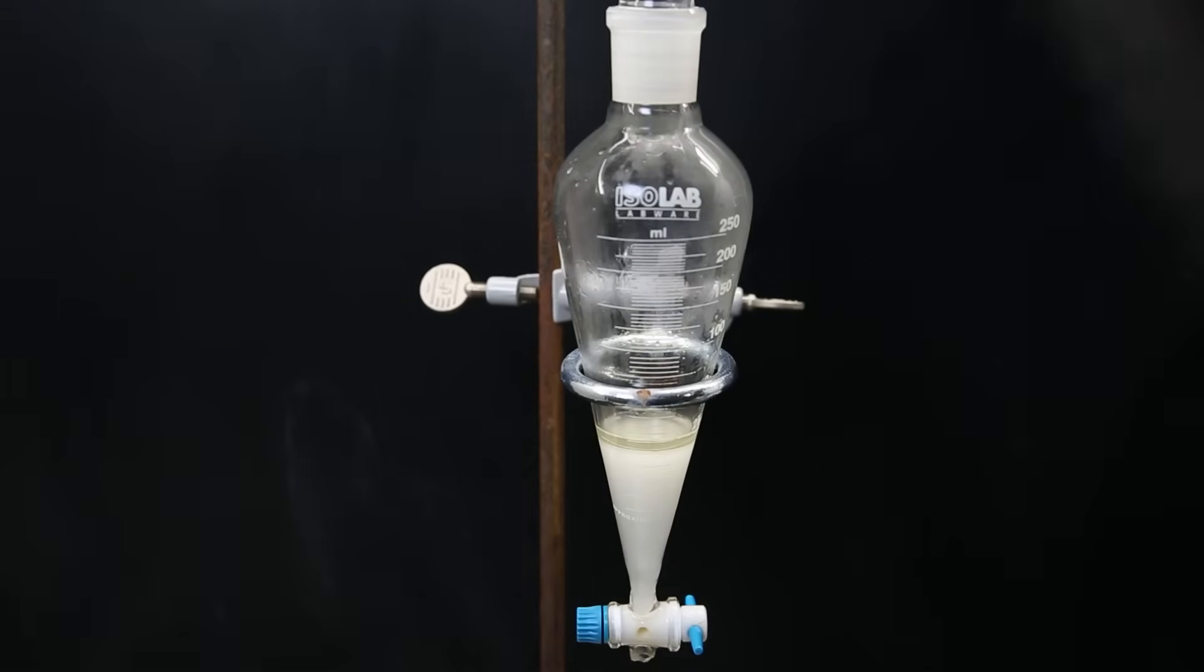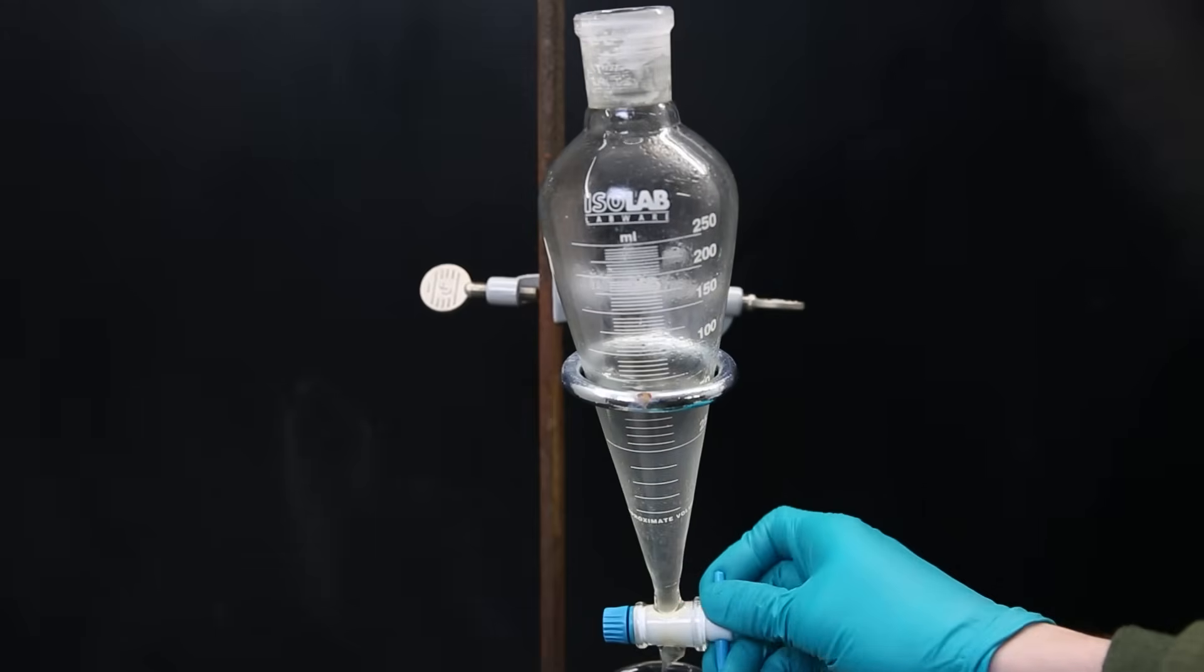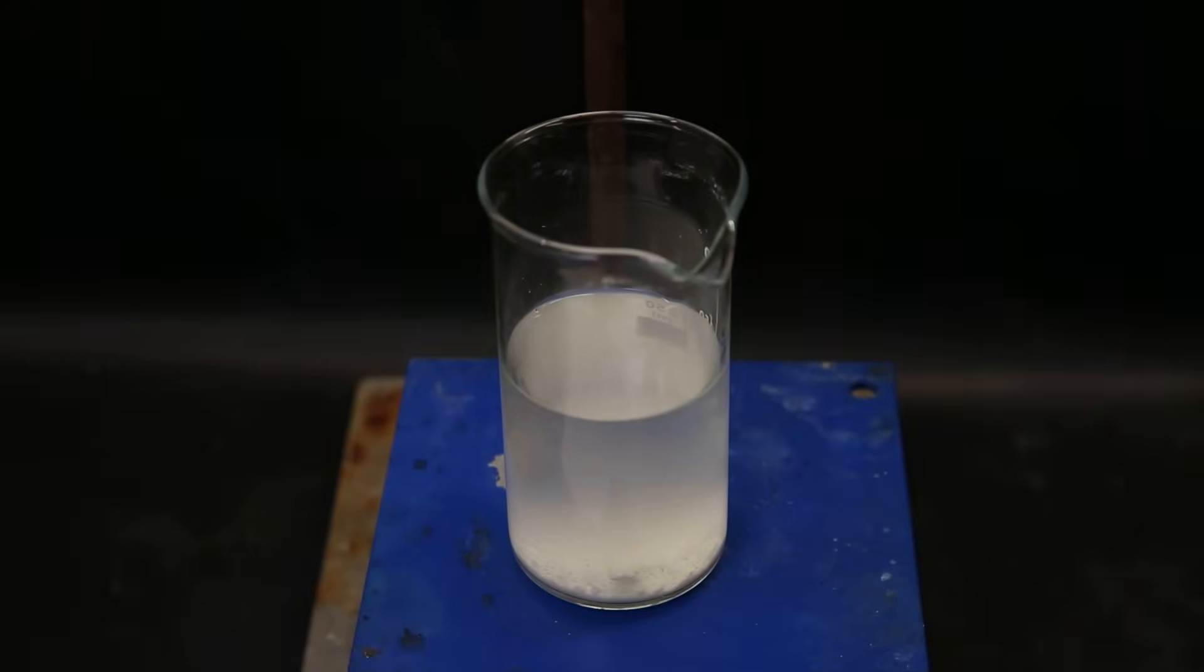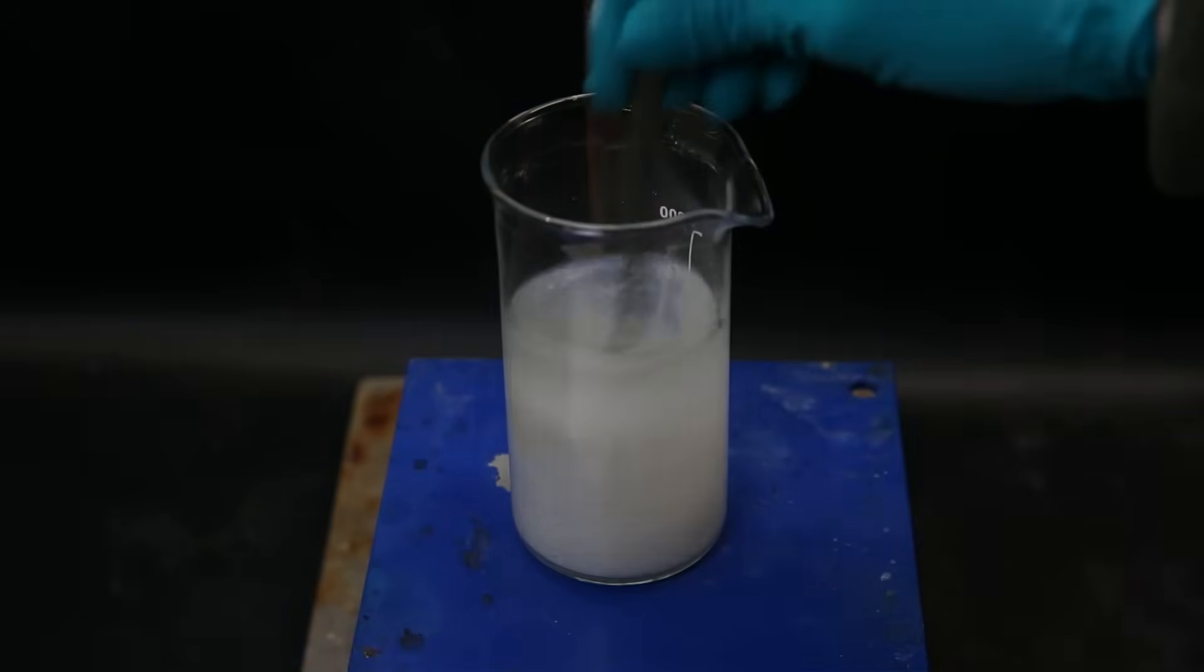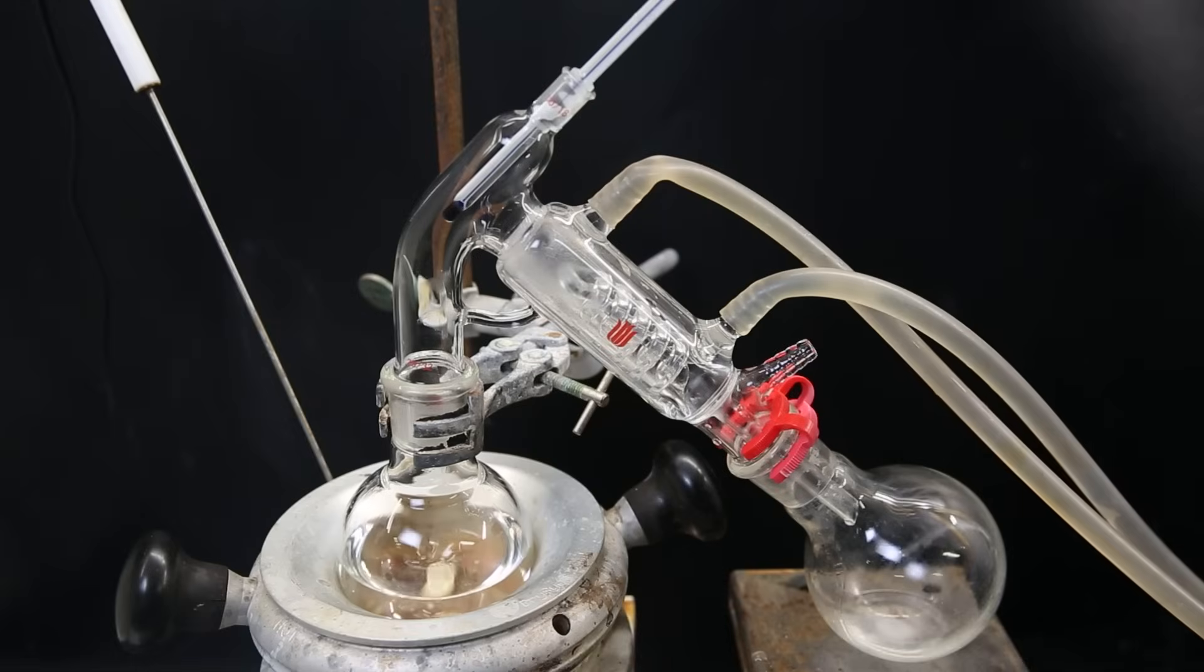I wash the flask with some ether and then extract the aqueous phase a total of three times with ether. I then combined all the ether extracts and dried it with a bunch of sodium sulfate. I then filter it all through some cotton and set the filter up for short path distillation to remove all of the ether.